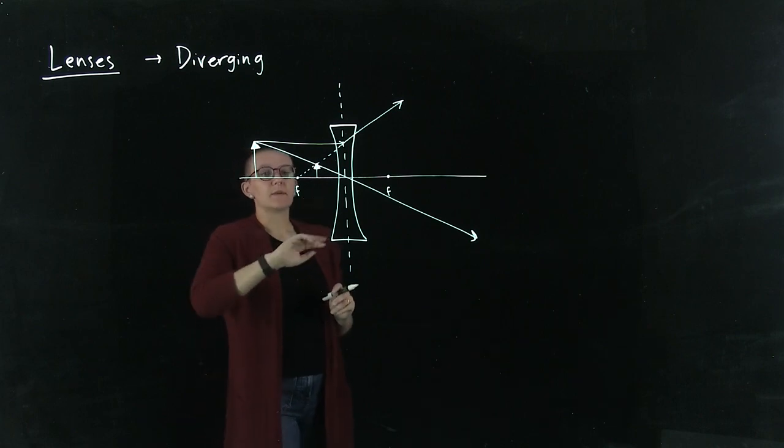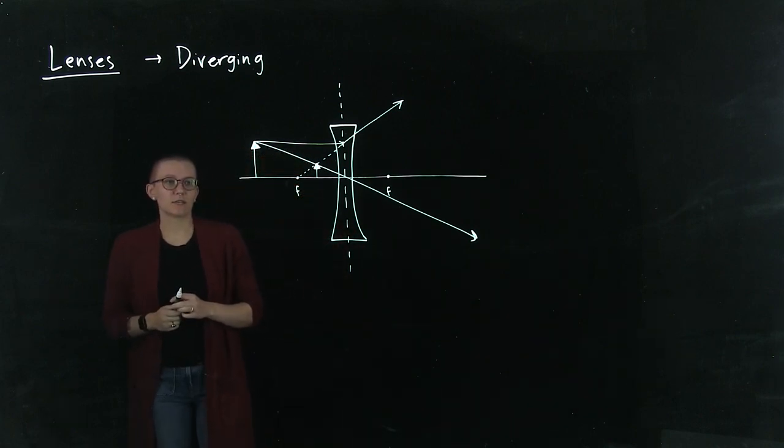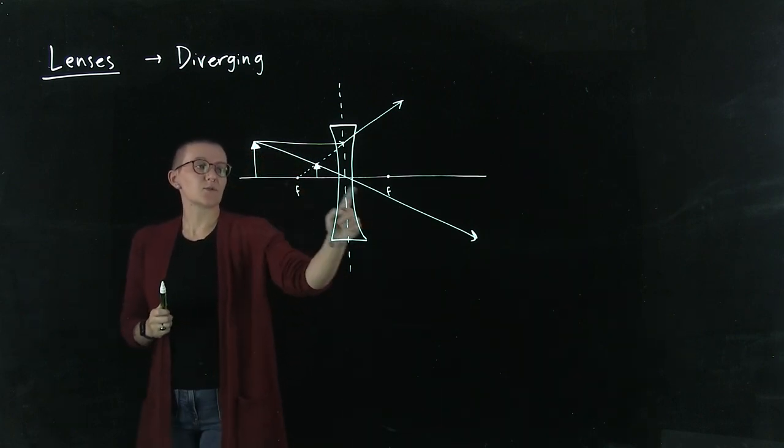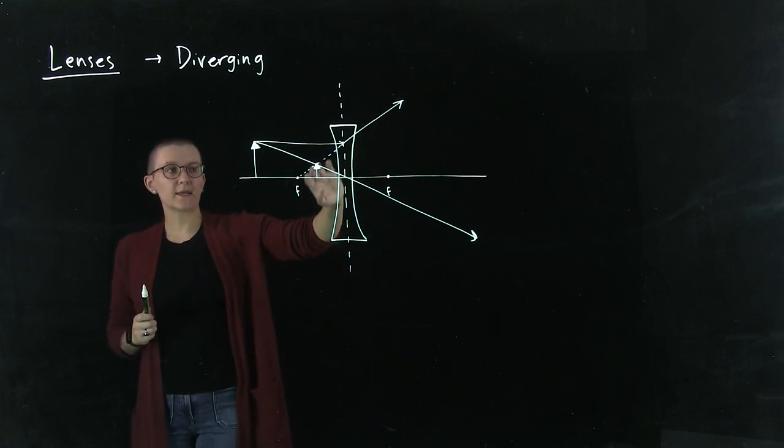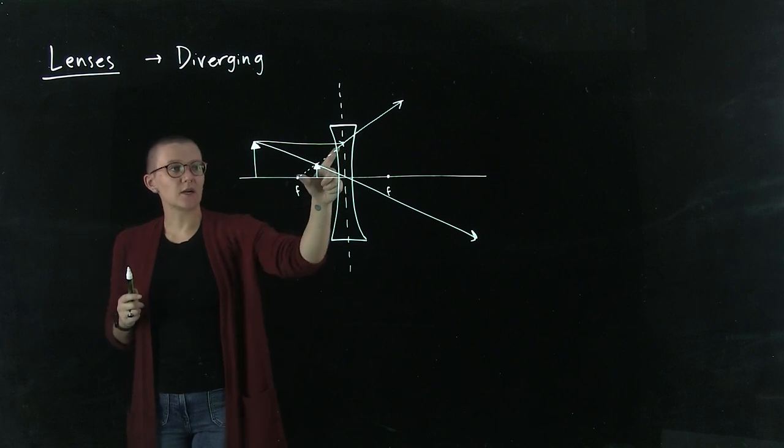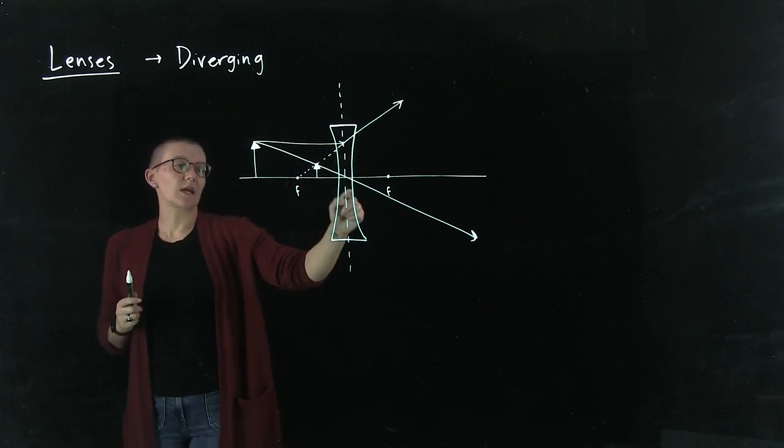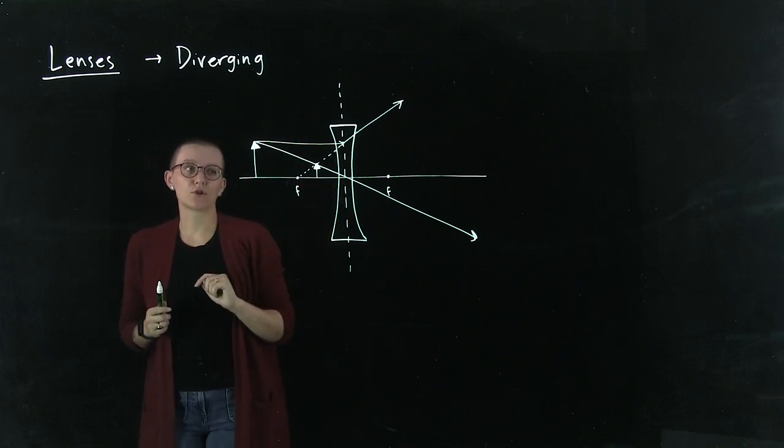This is a virtual image in the case of a diverging lens. Yes, there is one ray traveling through this point, but this other ray with this imaginary part is intersecting with this ray here. So we know this is a virtual image.